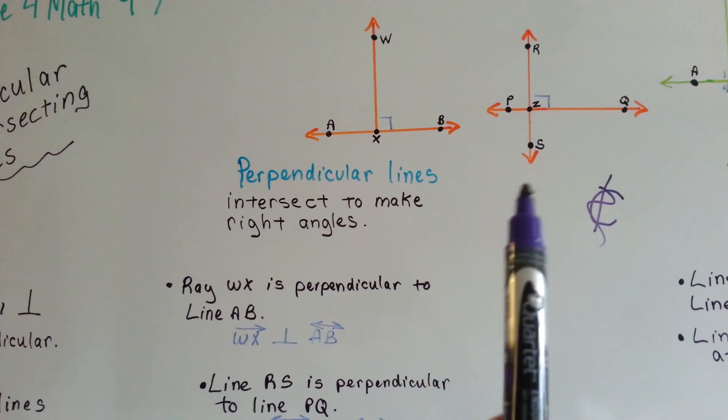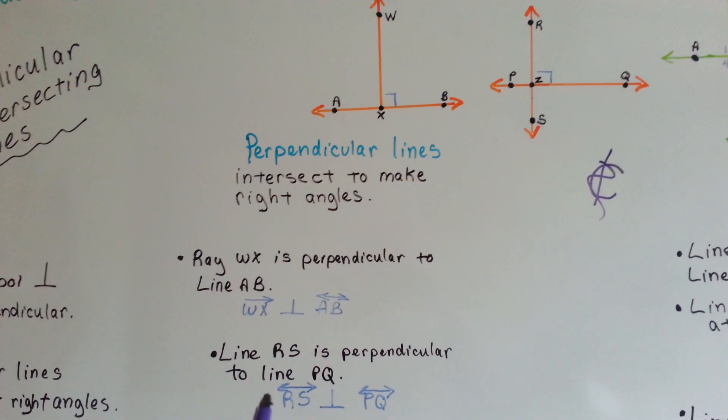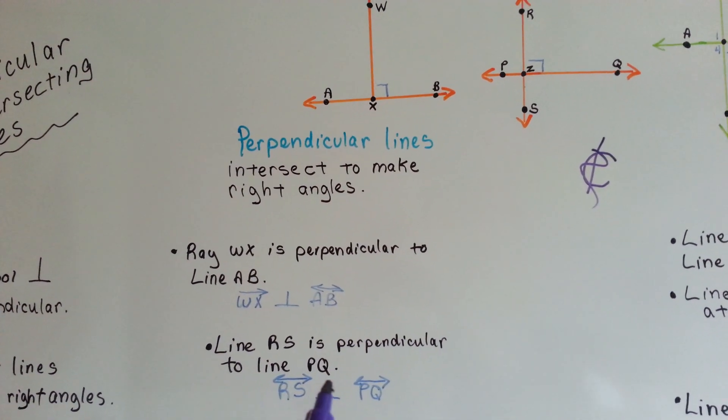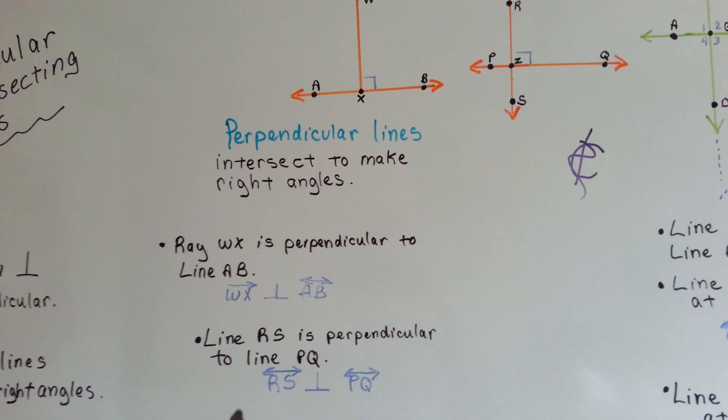For this one right here, you'd say line RS, the one going straight up and down here, is perpendicular to line PQ, the one going side by side. And to write it,